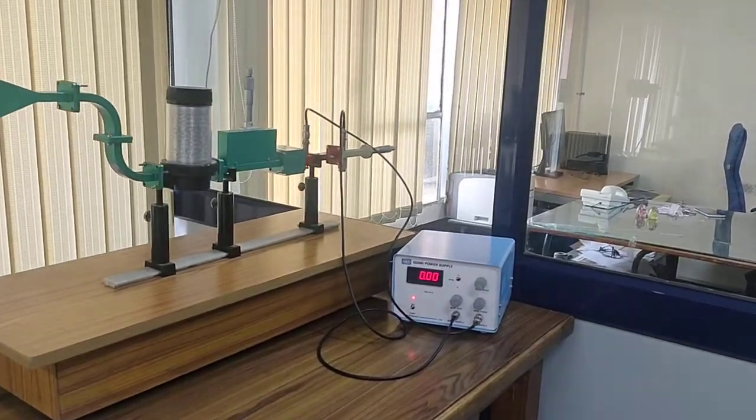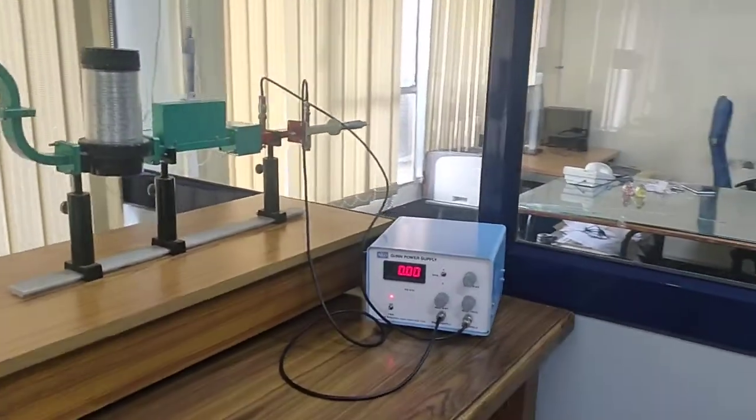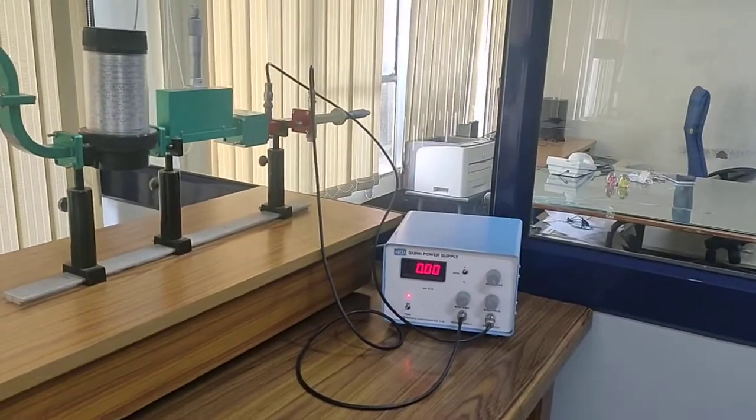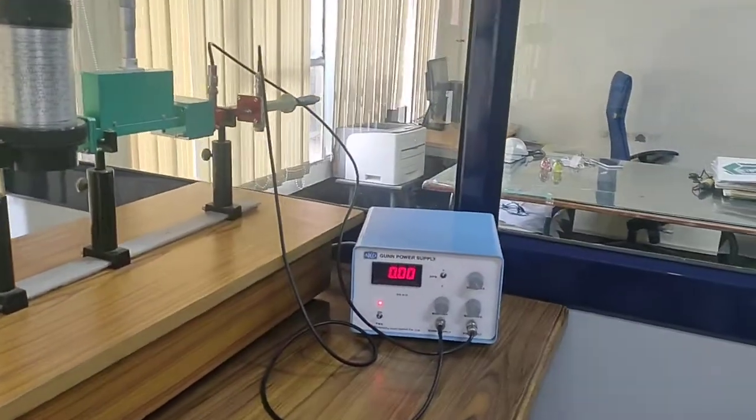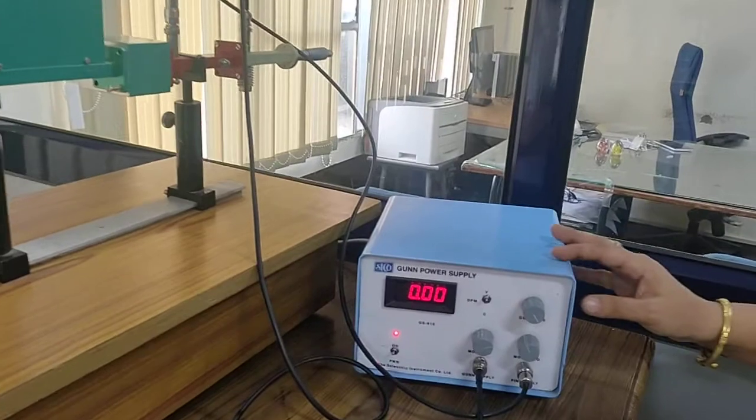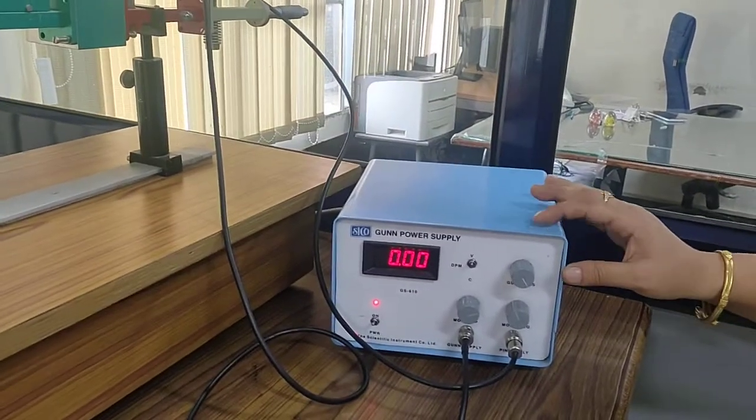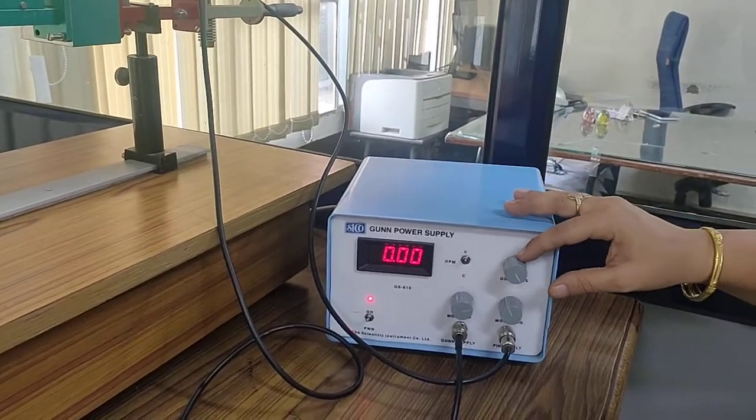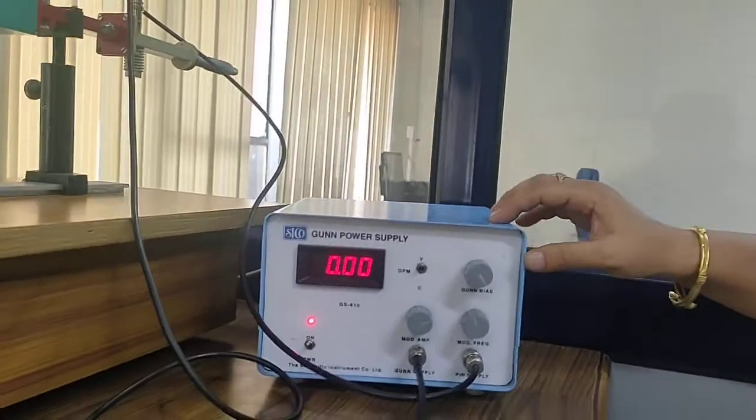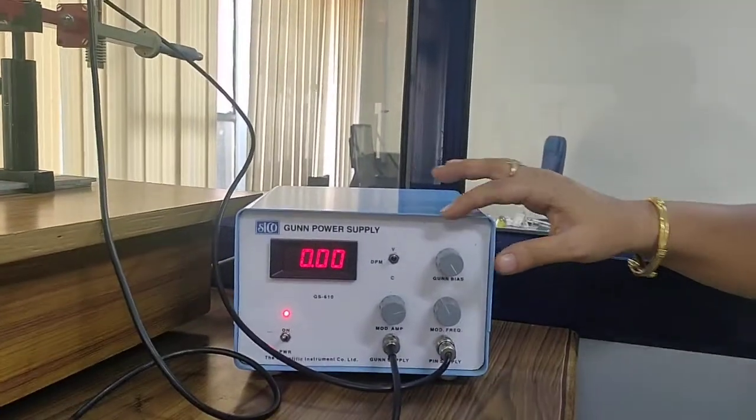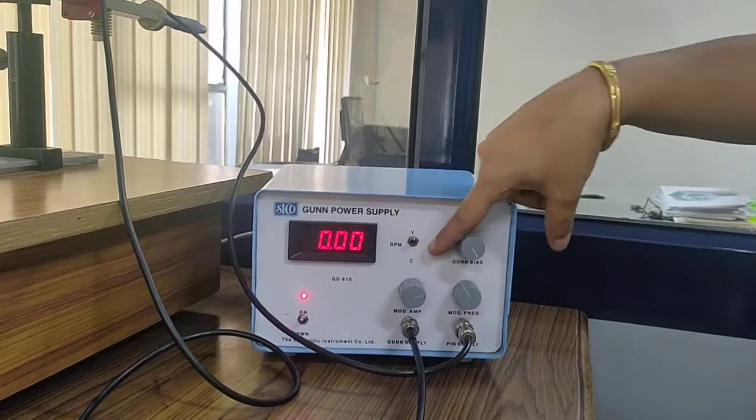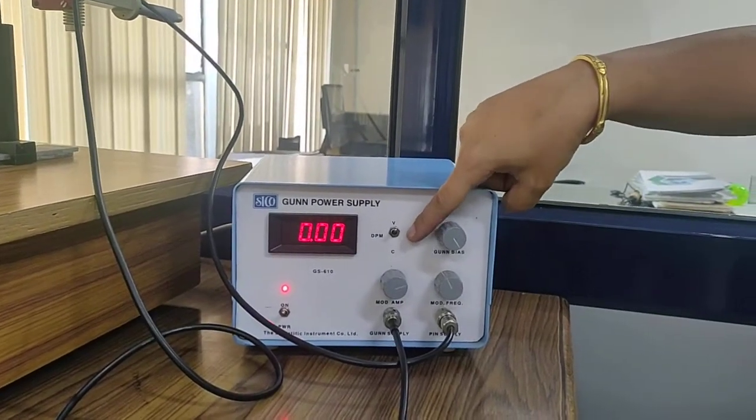This is the setup for finding the characteristic curve of a Gunn diode. Over here we have the Gunn power supply, which is the Gunn bias voltage that will vary, and then we have the voltage and current section.